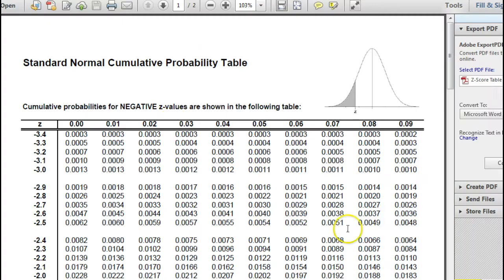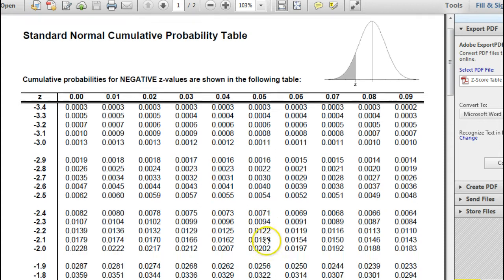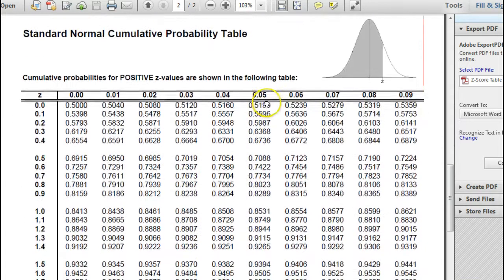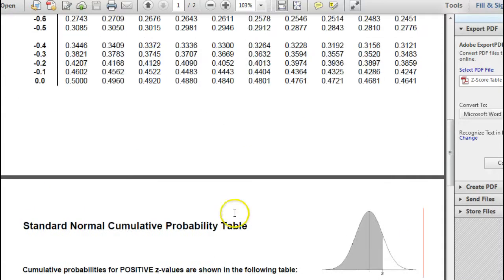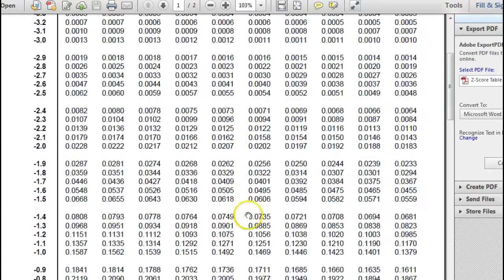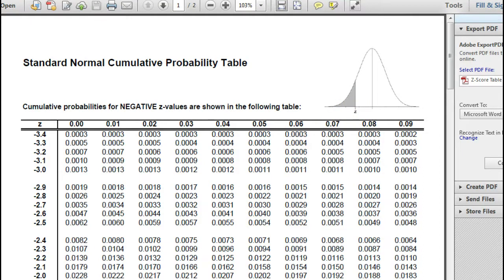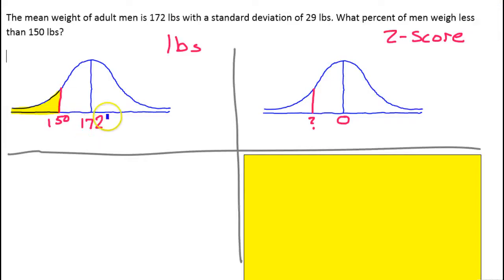we're going to use this chart of z-scores. If you don't have one of these z-score tables, then you need to Google it and download one because you need this to be able to answer these types of questions. Now this is a chart of z-scores. We're going to need the z-score instead of pounds.